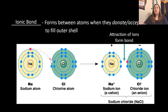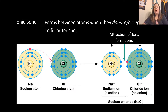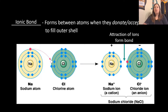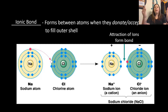An ionic bond forms between atoms when they donate or accept electrons. If an atom donates an electron — gives away a negative — it becomes a positive ion, called a cation, because it now has more protons than electrons. If an atom accepts an electron, it gains a negative charge, becoming a negative ion called an anion. When one donates and the other accepts, the resulting positive and negative ions attract each other and bond together — opposites attract.